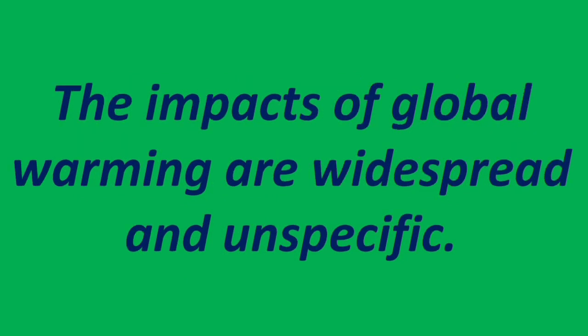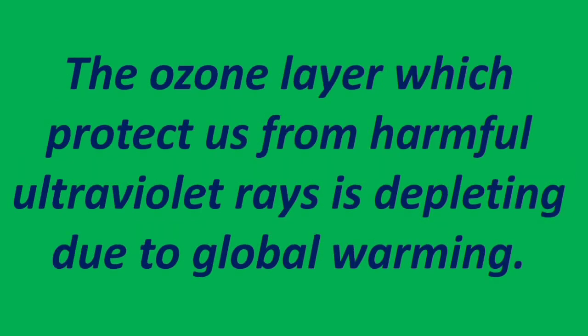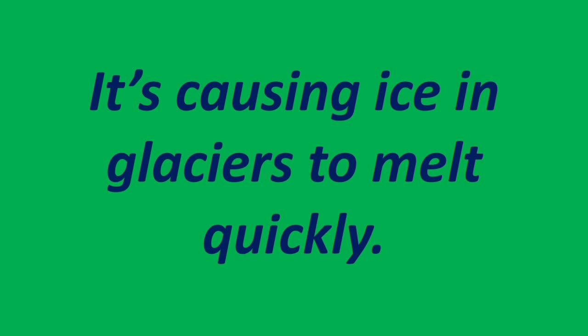The impacts of global warming are widespread and unspecific. The ozone layer, which protects the earth from harmful ultraviolet rays, is depleting due to global warming. It is also causing ice in glaciers to melt quickly.